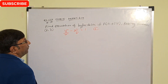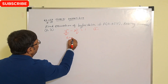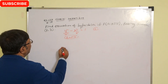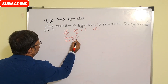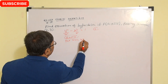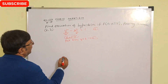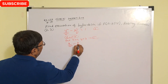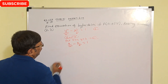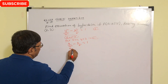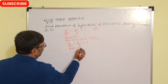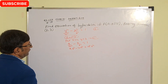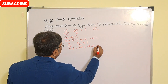Now foci are (0, ±c), so c = √10. The hyperbola passes through the point (2, 3), so put x = 2 and y = 3 in equation 1. We get 9/a² − 4/b² = 1. Taking LCM, this becomes 9b² − 4a² = a²b². This is equation number 2.